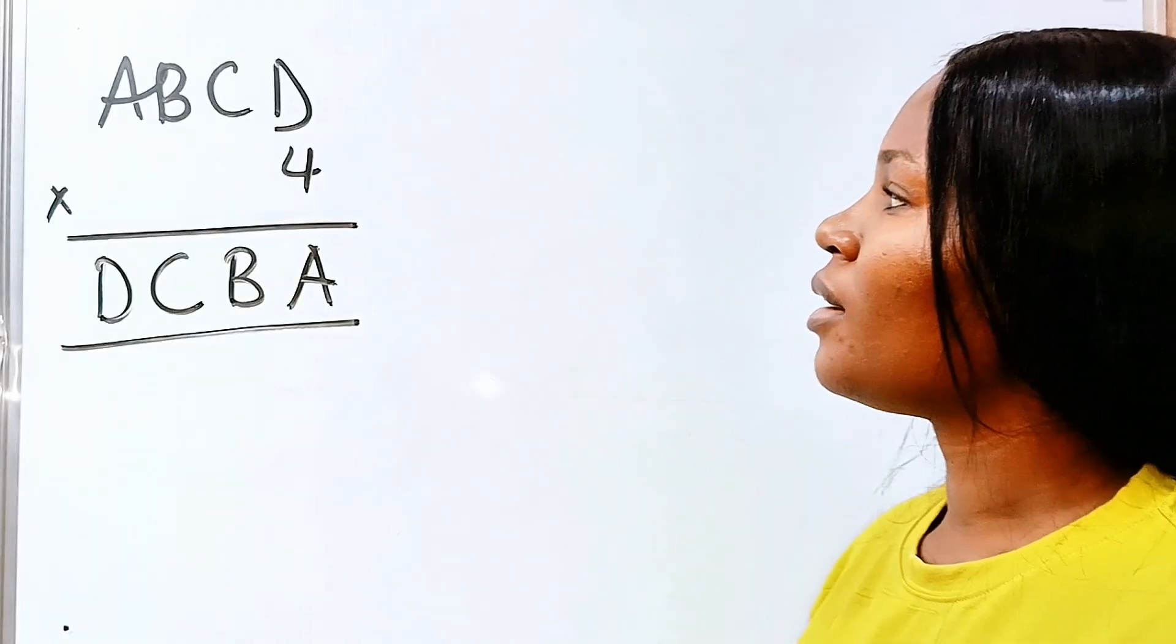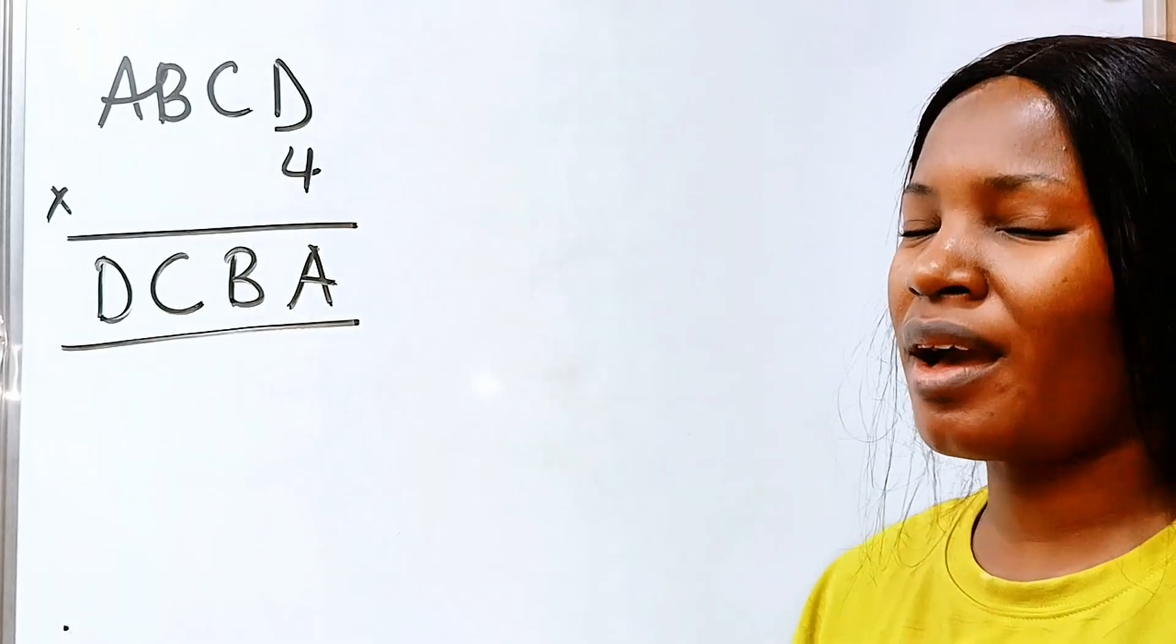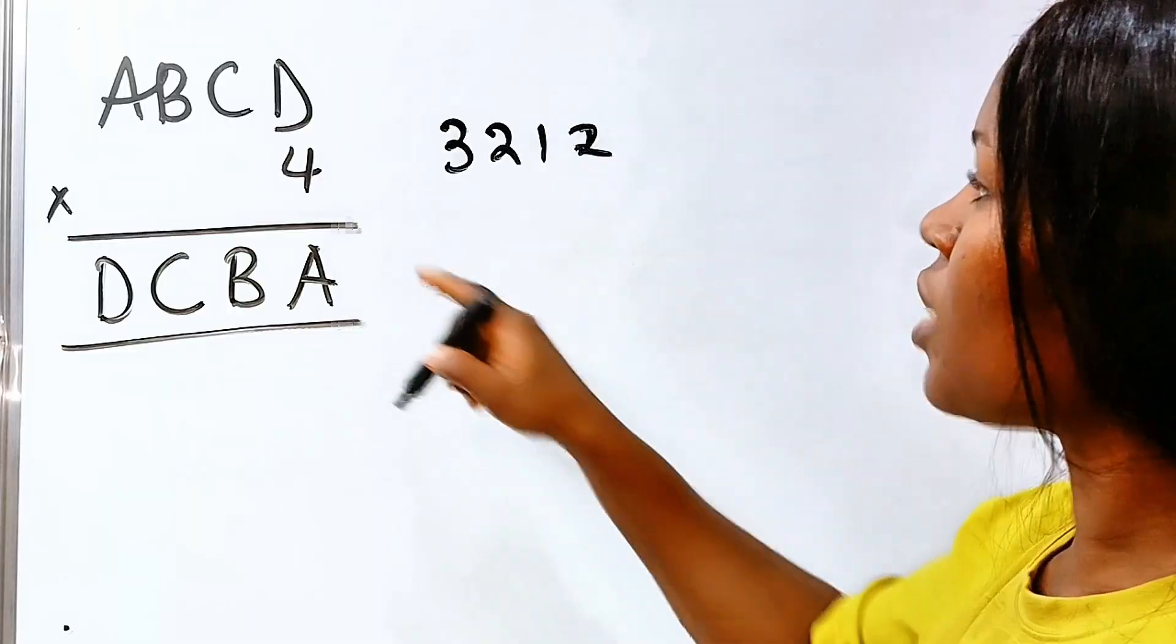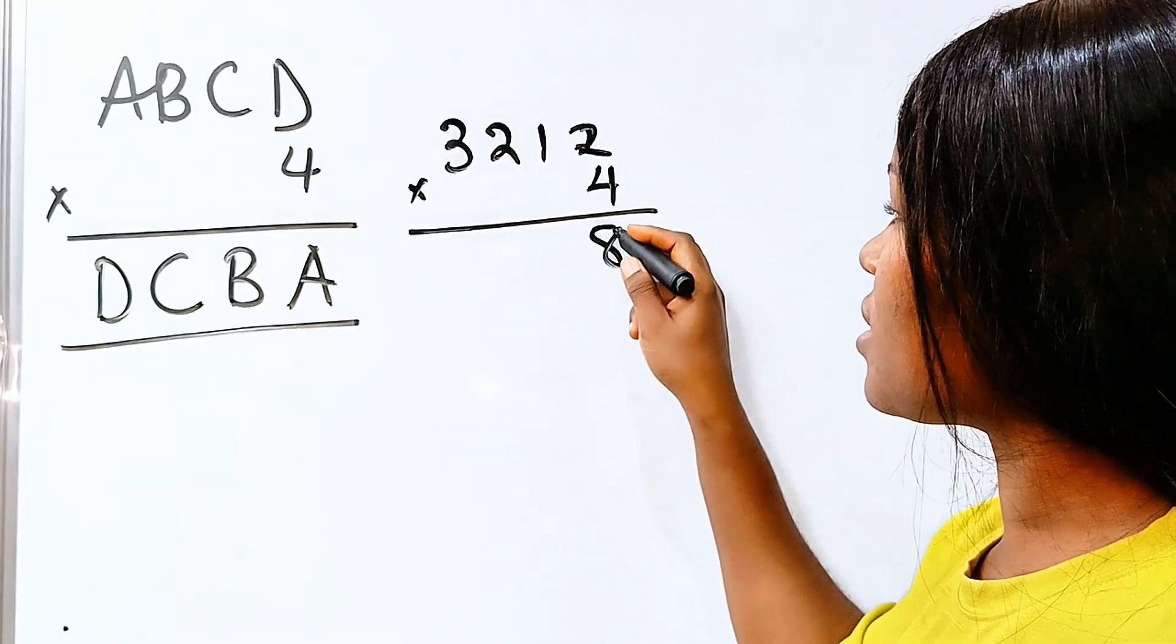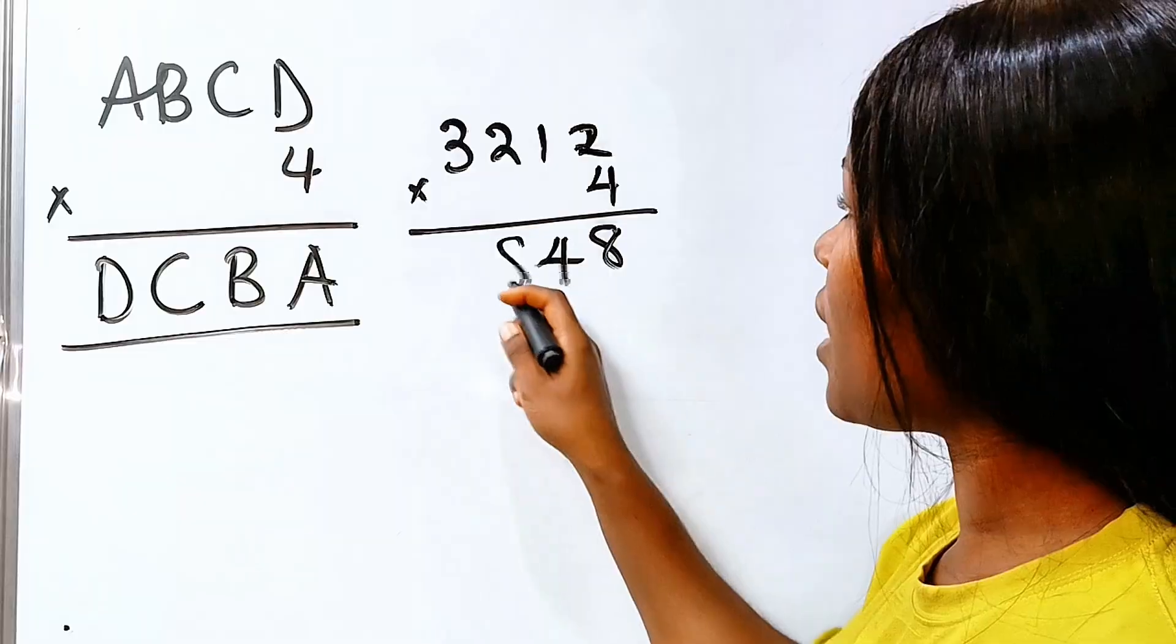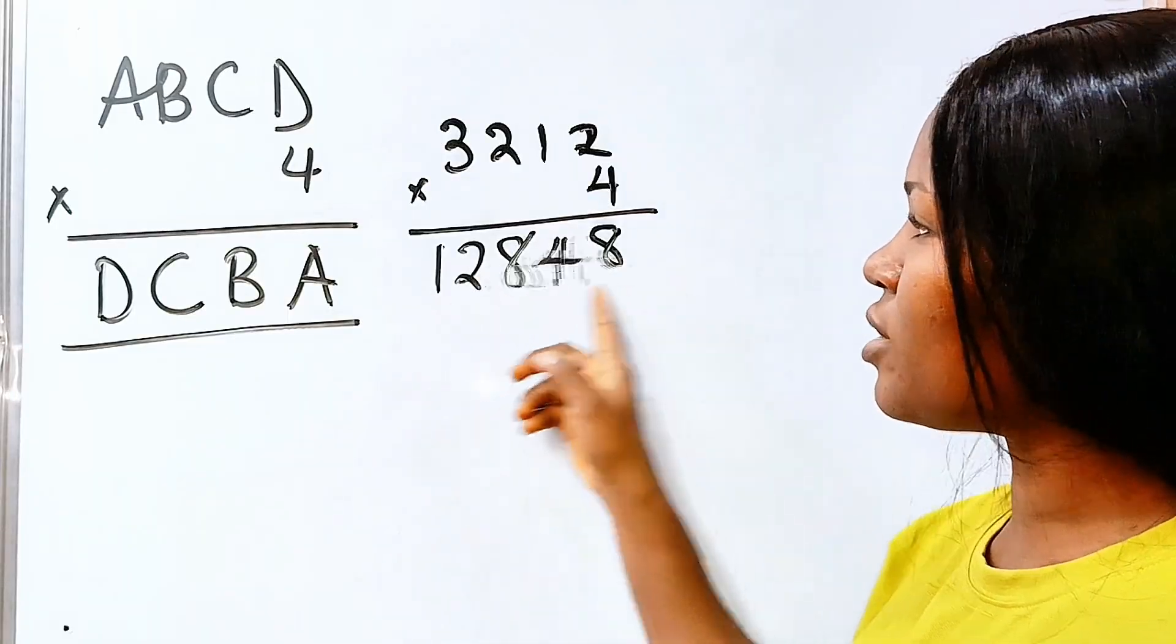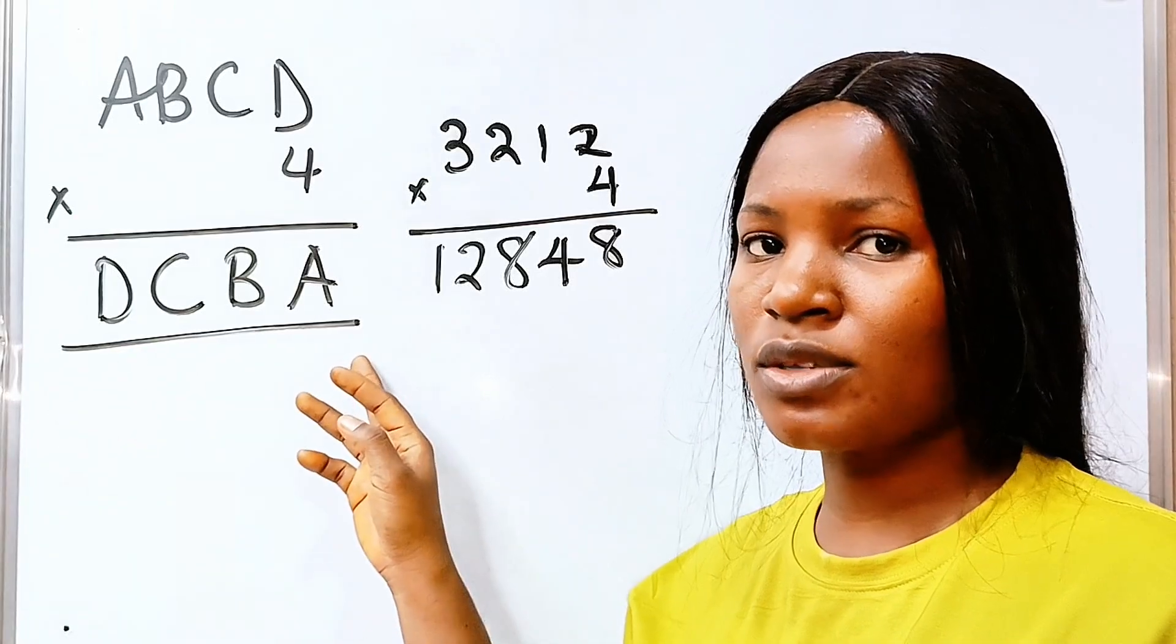First of all, we know that we have four digit numbers here. If we pick a number at random, for example, 3, 2, 1, 2, and we multiply it by 4, we get 12848. You will notice that we now have five digit numbers as the solution. But here, we have four digit numbers as the solution.